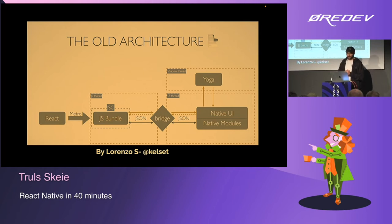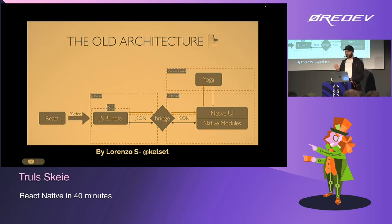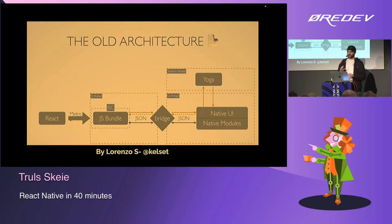If they have a lot of breaking changes, all of those teams would have to go and update their code. So both the old and the new architecture are living side by side now for a while to make sure everyone updates. There is a Metro Bundler that compiles the React code to a JavaScript bundle — just as you create a JavaScript bundle on the web — and that lives on the JavaScript thread.